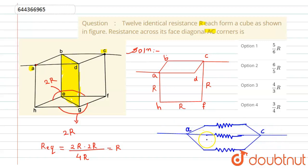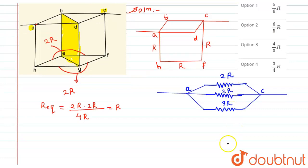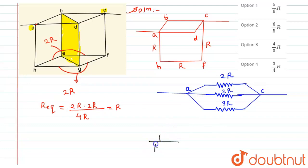In the final equivalent circuit between the face diagonal corners A and C, two series combinations each give 2r, and one branch gives r + r + r = 3r. All three of these branches are in parallel. The equivalent resistance formula is: 1/R_eq = 1/(2r) + 1/(2r) + 1/(3r).